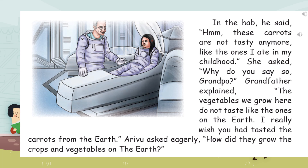Let us continue. In the HAB, he said, 'These carrots are not tasty anymore, like the ones I ate in my childhood.' She asked, 'Why do you say so, Grandpa?' Grandfather explained, 'Vegetables we grow here do not taste like the ones on Earth. I really wish you had tasted the carrots from Earth.' Arya Madhu asked eagerly, 'How do they grow the crops and vegetables on the Earth?'